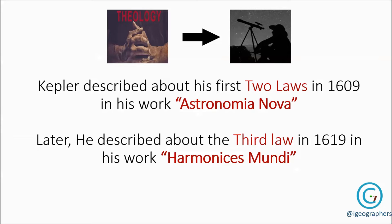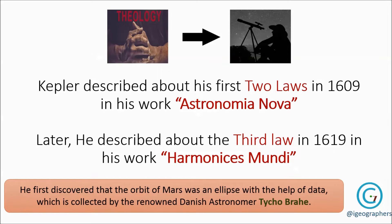Also, he was the first person on planet Earth to discover that the orbit of Mars is not circular but an ellipse. He discovered that with the help of data which was collected by Danish astronomer Tycho Brahe.